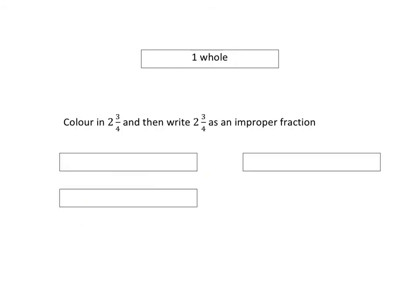Okay, open your homework books and do this question. First of all, color in two and three quarters in those diagrams that you're given and then write two and three quarters as an improper fraction. Pause the video and do it now.